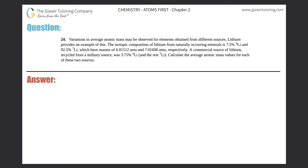Number 24. Variations in average atomic mass may be observed for elements obtained from different sources. Lithium provides an example of this. The isotopic composition of lithium from naturally occurring minerals is 7.5% lithium-6 and 92.5% lithium-7, which have masses of 6.01512 AMU and 7.01600 AMU, respectively. A commercial source of lithium recycled from a military source was 3.75% lithium-6 and the rest was lithium-7. Calculate the average atomic mass values for each of these two sources.